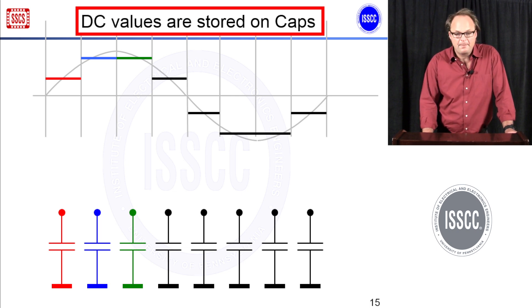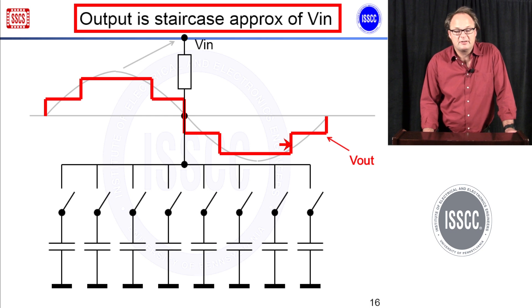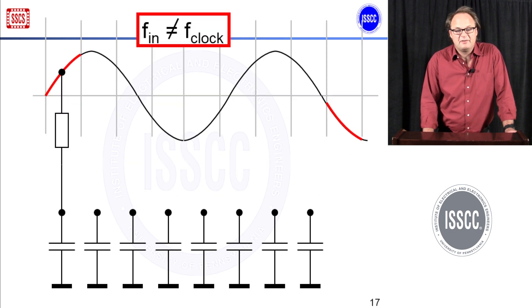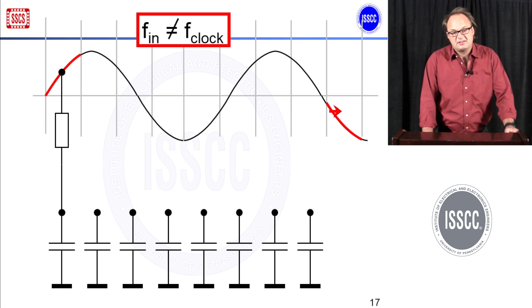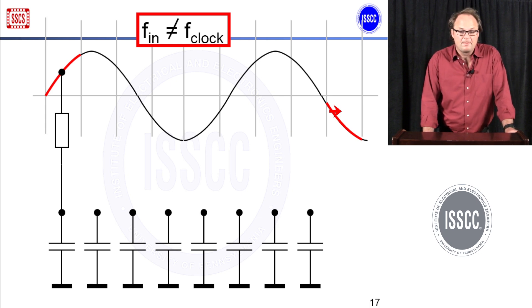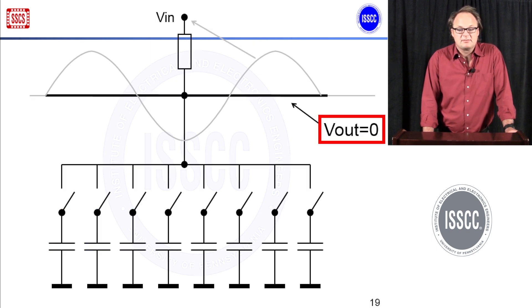It looks a bit like a digital oscilloscope picture of your sine wave. The output is in fact this node, looking at all these DC voltages, so the output is a staircase approximation of the sine wave. The bigger the N — the more capacitors and phases — the better the approximation. If the input signal is not equal to the clock but slightly different, then during charging here we look at this part of the sine wave, but the next time we look at a completely different part. Since the settling is so very slow, after many many periods the average will just be zero — first it goes up, then it goes down, it stays in the middle. After many periods of settling, the DC voltages on all the capacitors are equal, meaning the output signal is zero.